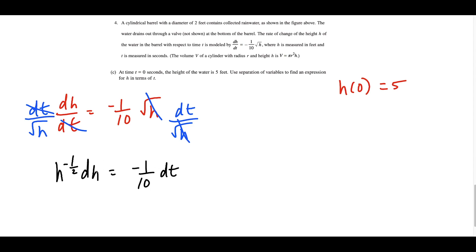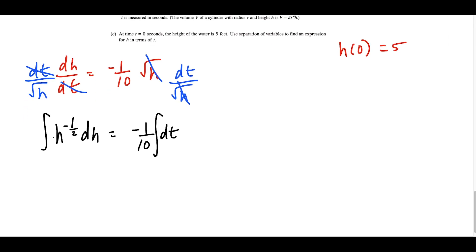Now we take the antiderivative of both sides. The antiderivative of h to the negative 1/2 is h to the 1/2, multiplied by its reciprocal 2, giving 2h to the 1/2. On the right side the antiderivative of dt is just t, so we get negative 1/10 times t plus C. It's conventional to write the constant on the side of the independent variable.